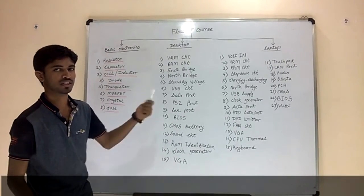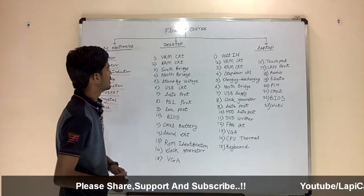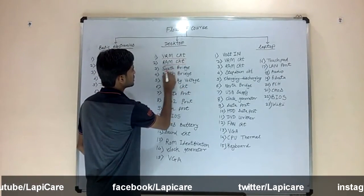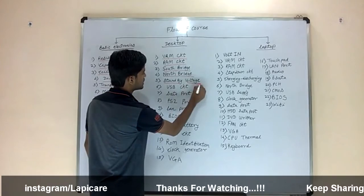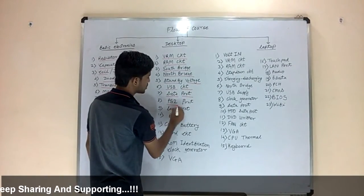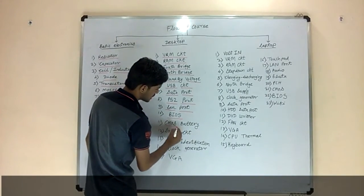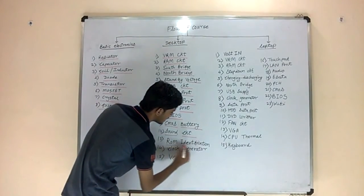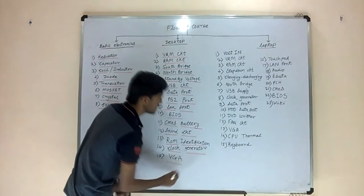Then we are moving towards the desktop. Desktop contains 15 circuits like VRM circuits, RAM circuit, south bridge, north bridge, standby voltage, USB circuit, SATA port, PS2 port, LAN port, BIOS, CMOS battery, sound circuit, ROM identification, clock generator and VGA.